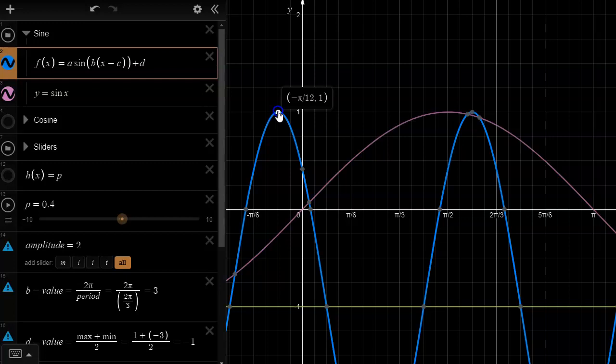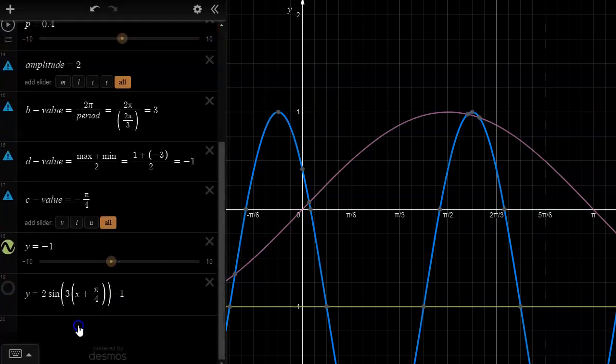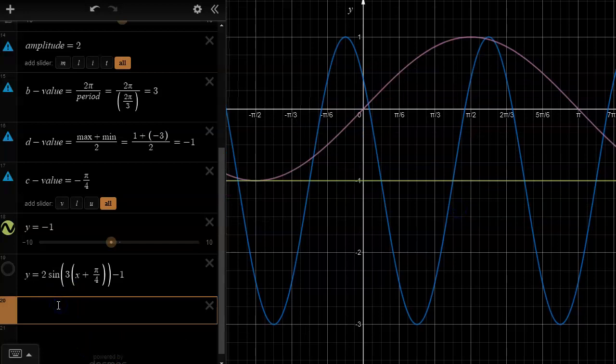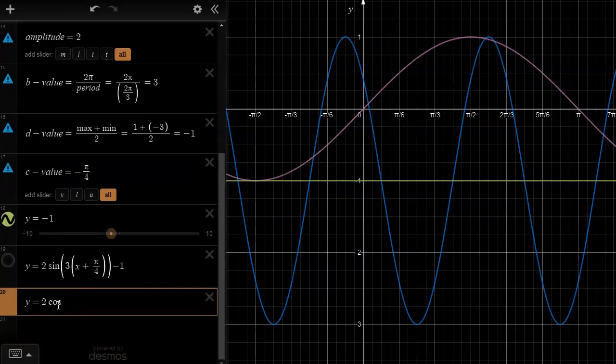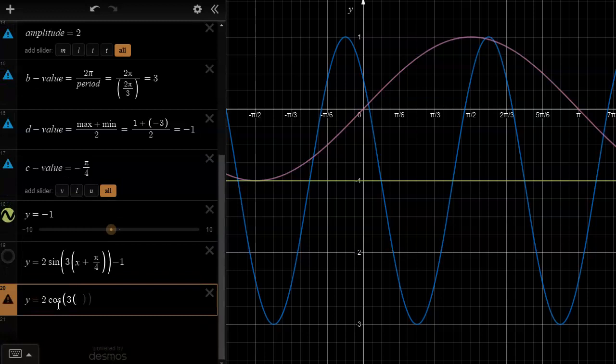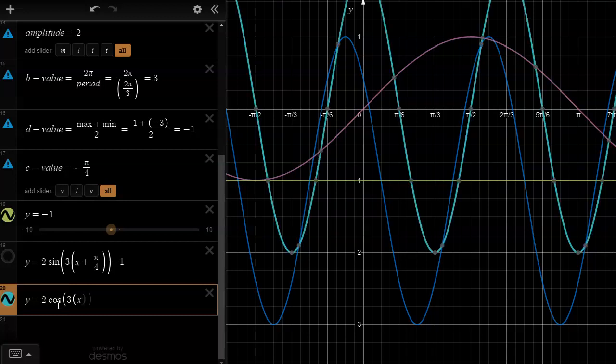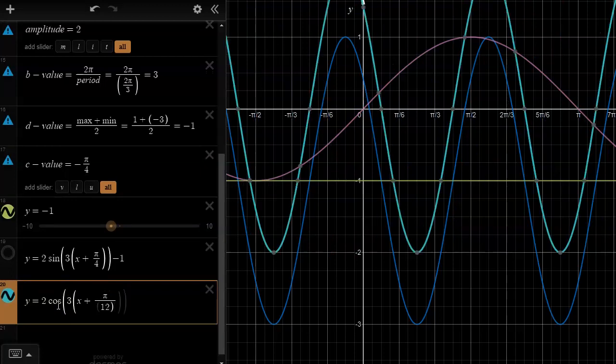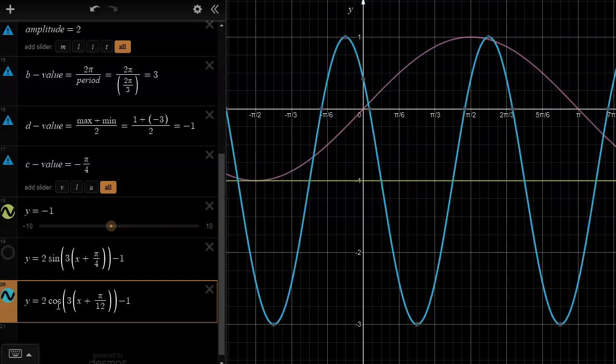This point right here used to be on the y-axis and it got shifted to the left by pi over 12 radians. As a cosine function it would be y equals 2 cos 3x, minus pi over 12 is plus pi over 12, and then minus 1. Just like that we end up with the same graph except now written as a cosine equation.